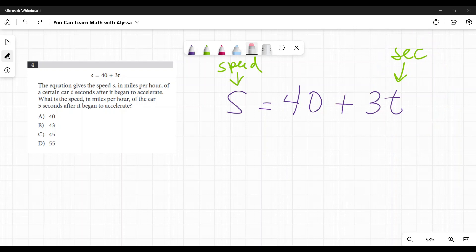So five seconds, I'm going to replace that T with five, which is what they told me. And then I just do my math here. 40 plus three times five is 15. 40 plus 15 is 55. That is my speed, 55 miles per hour. And that is D.